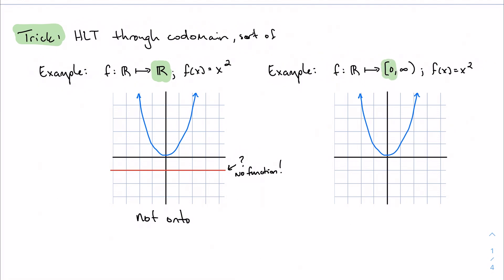But if I restrict my codomain and say, well, let's just look at all the positive real numbers, then that is onto. I can put this horizontal line anywhere and I can find a function value. It doesn't necessarily need to be one function value. This is actually a many-to-one function, but that's okay. All we care about right now is, is it onto? And it is onto.